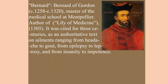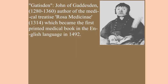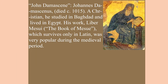Bernard of Gordon was master of the medical school at Montpellier and author of Lily of Medicine, cited for three centuries as an authoritative text on ailments ranging from headache to gout, epilepsy to leprosy, and insanity to impotence. Gatisden refers to John of Gaddesden, author of Rosa Medicinae, which became the first printed medical book in English in 1492. John Damascene refers to Johannes Damascenus, a Christian who studied in Baghdad and lived in Egypt; his work The Book of Misu was very popular during medieval times.